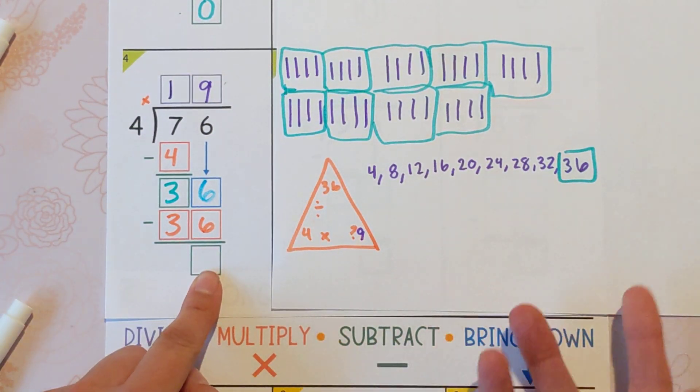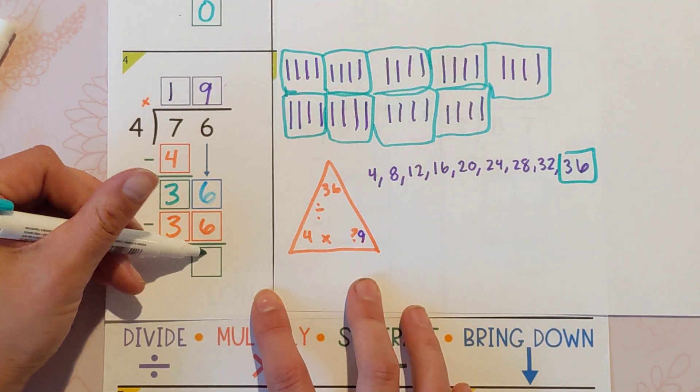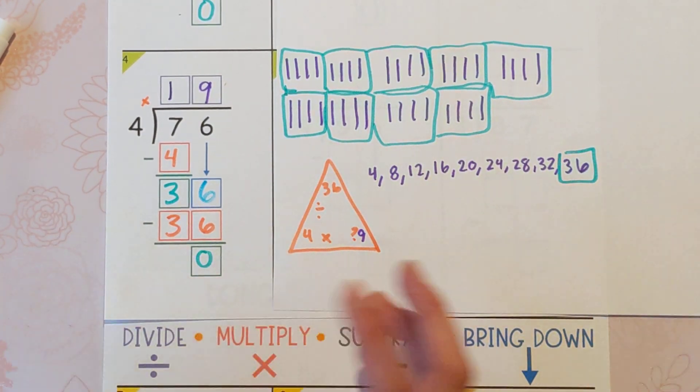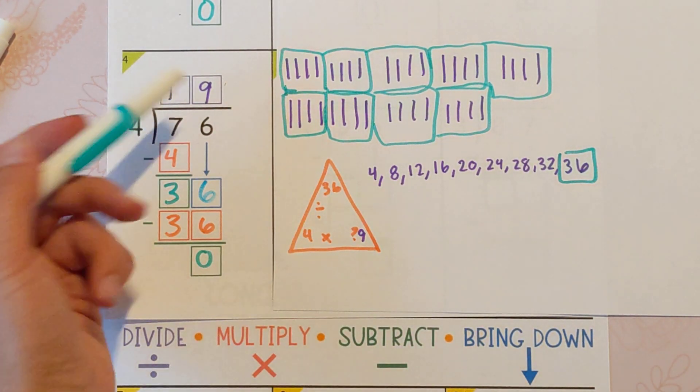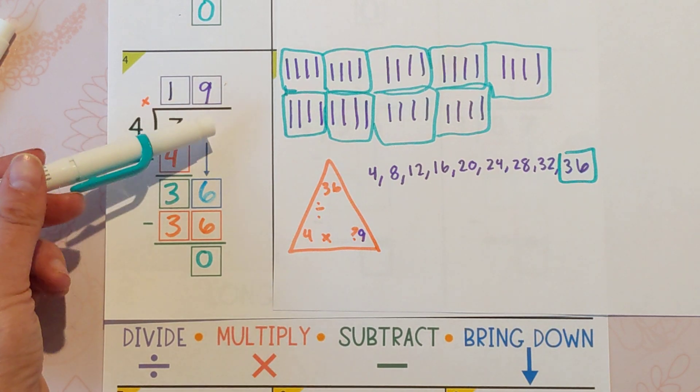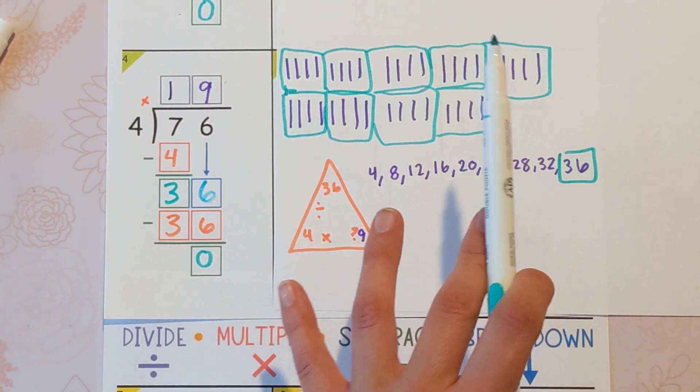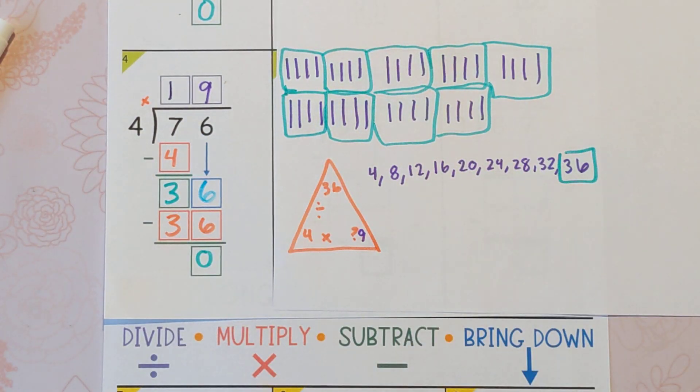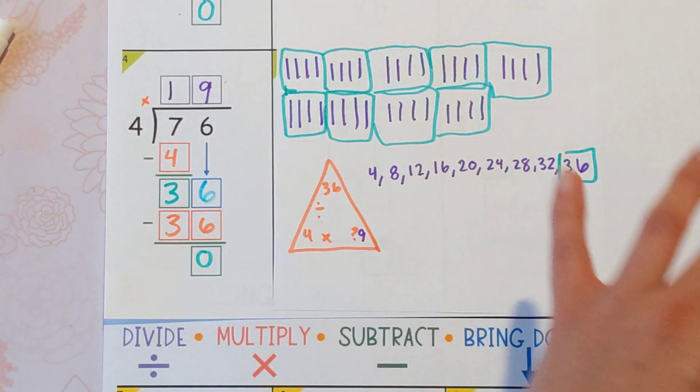And then we're going to subtract just to see if there's anything left over. 36 minus 36 is zero. So there's nothing left to bring down and there's nothing left over, so we know that we're finished. If you wanted to double check this, you would do four times 19 and you would get 76. So what this means is, let's say you had 76 donuts and you wanted to put them into four boxes. If you drew 76 tick marks and you wanted to put them into four groups, it would divide up evenly. There would be 19 in each box or group.